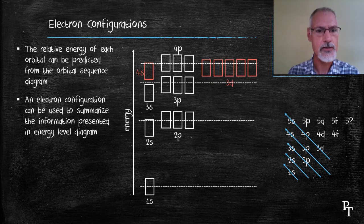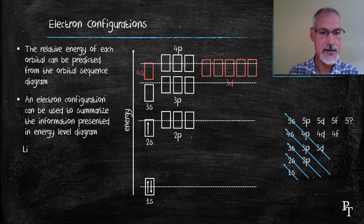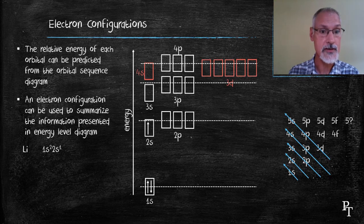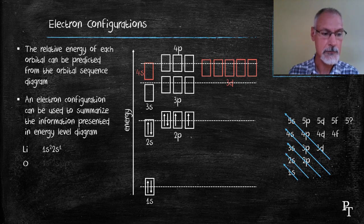It's now time to introduce something called an electron configuration, which is really a shorthand way of representing the information present in my energy level diagram. Let's return to lithium with its three electrons. I place those three electrons in the orbits shown, and now I write that down as an electron configuration — a shorthand way. 1s², 2s¹, where the superscripts represent the number of electrons in that particular orbit. Let's return to oxygen — the energy level diagram for oxygen with its eight electrons — I would write that as 1s², 2s², 2p⁴.